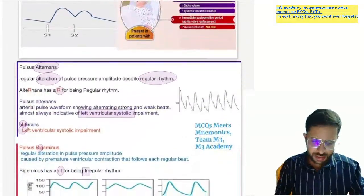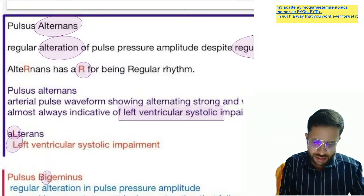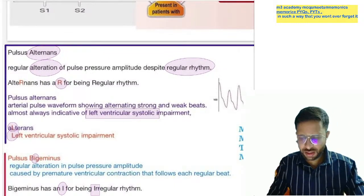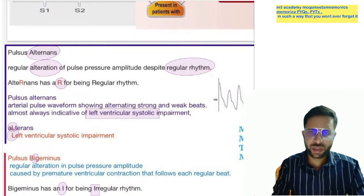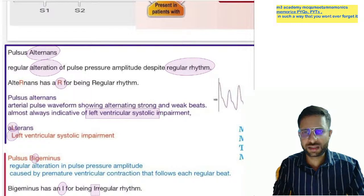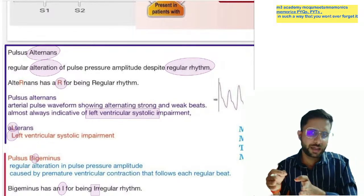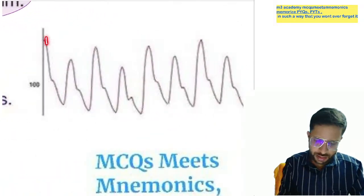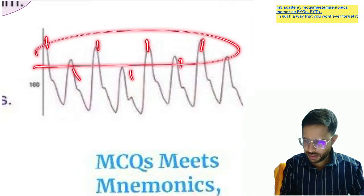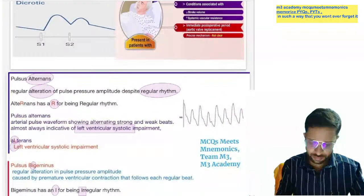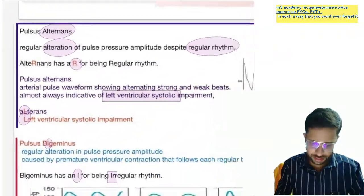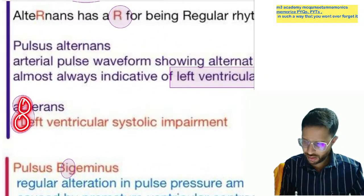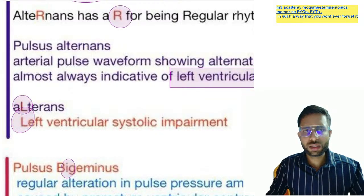Next pulse is pulsus alternans. As the name suggests, alternans means regular alternation of the pulse pressure amplitude despite a regular rhythm. In the spelling of alternans there is R — R means regular rhythm, but with an alternating pattern. In this picture you can see regular alternation: 1, 2, 1, 2. Pulsus alternans is found in left ventricular systolic impairment — the L in alternans stands for left ventricular systolic impairment.